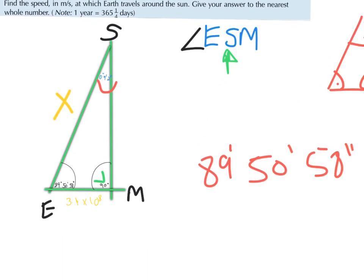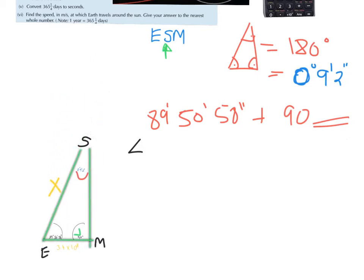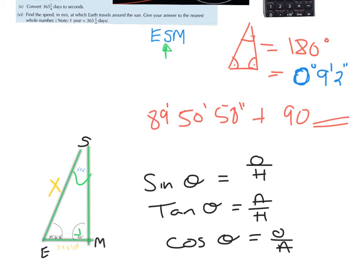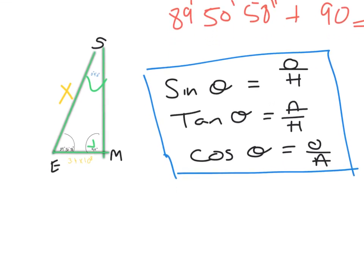I've got the diagram filled in and I'm looking for x, the earth-to-sun distance. I can't use Pythagoras because I only know one side. However, I do have another method for right angle triangles — trigonometry. Let's use trig ratios. We write down our ratios first, then figure out which one to use by labeling the triangle.